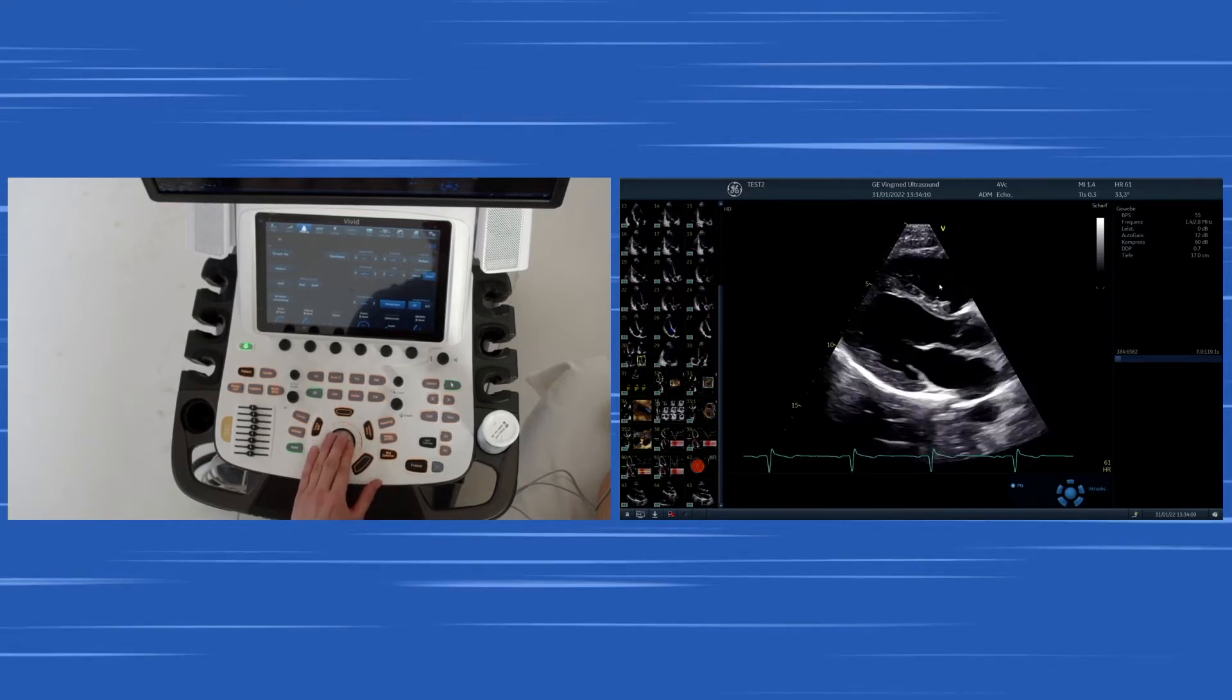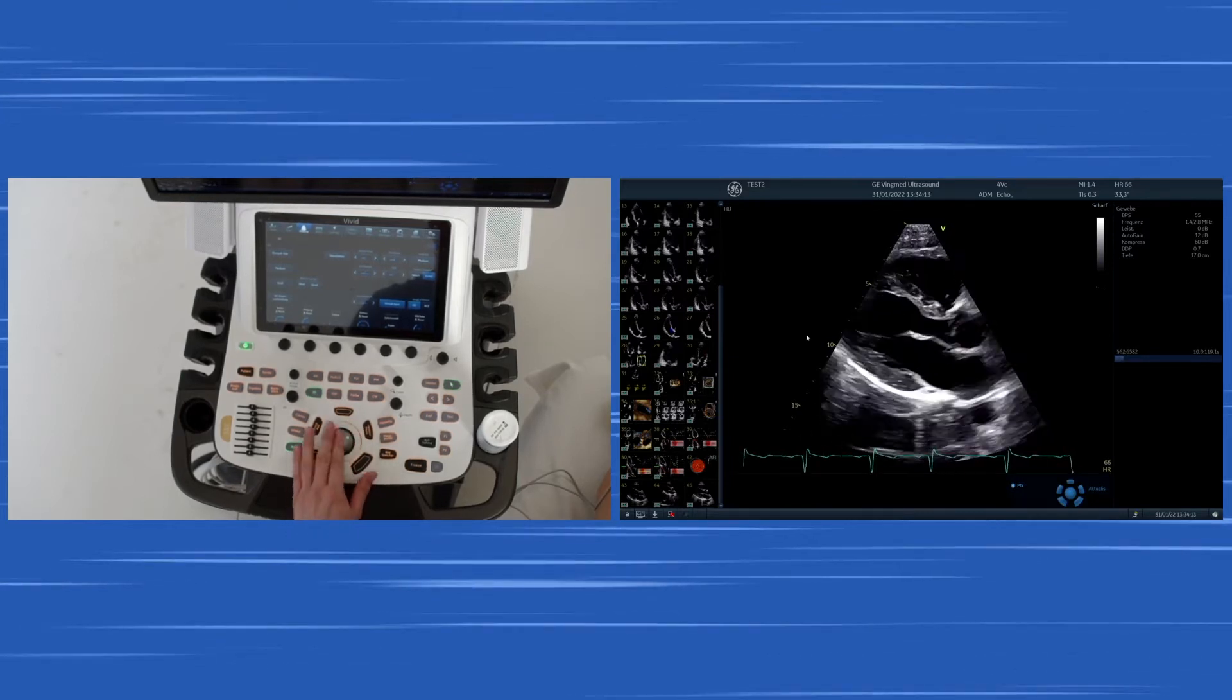What we see initially is the right ventricle, the interventricular septum, the inferolateral wall.